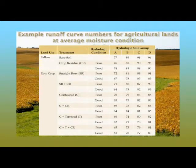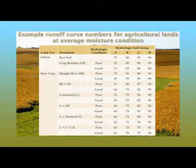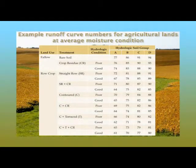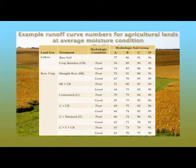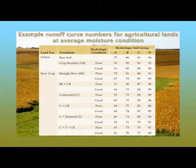If we look at a contour system with crop residue under soil group B and good hydrologic condition, we might further reduce the curve number to 74. Adding a terrace — so contoured land with terrace and crop residue, good hydrologic condition, soil group B — we might have a curve number of 70. So as we've moved from straight row to contoured to crop residue to terrace, we may reduce our curve number from 78 down to 70, resulting in less runoff depth from the same landscape.